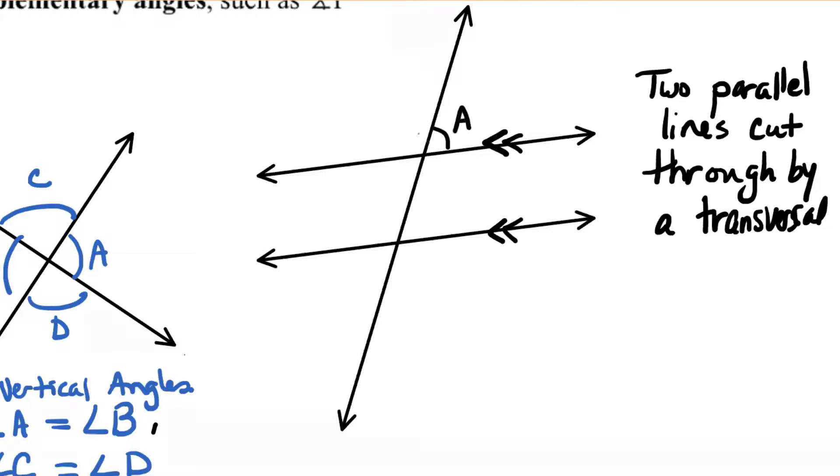if I call this angle A and this angle B, they add up to what? 180. That's right. But also we have vertical angles, right?